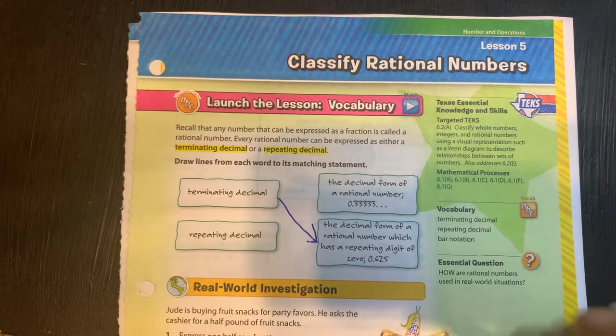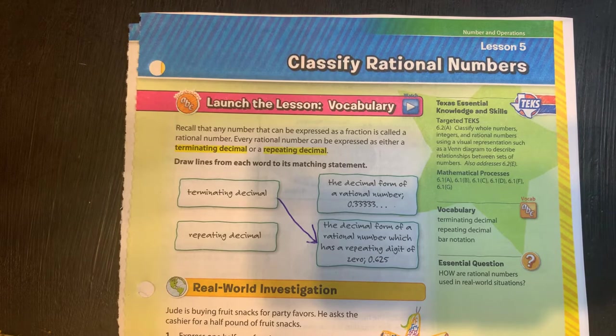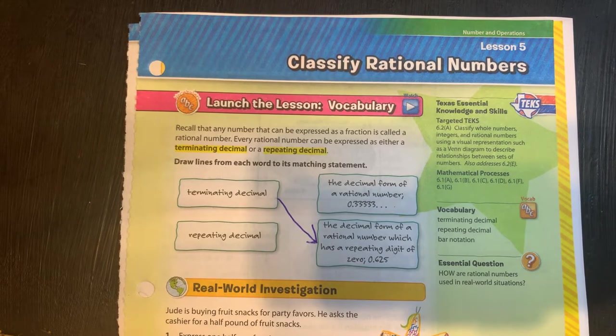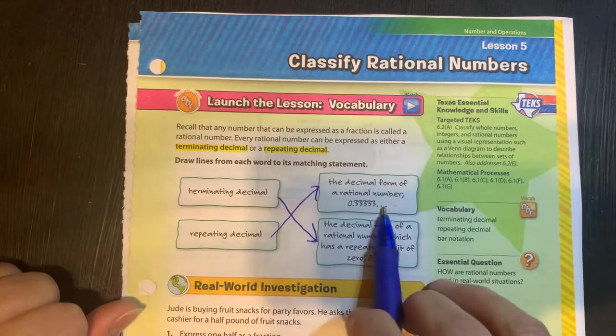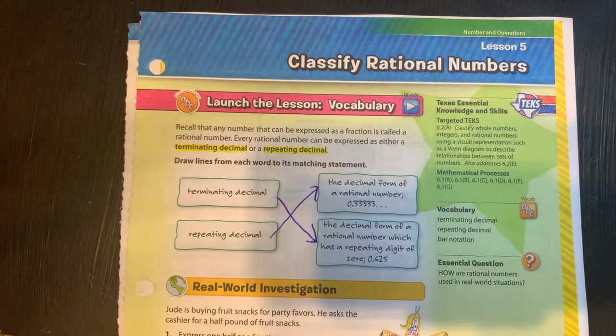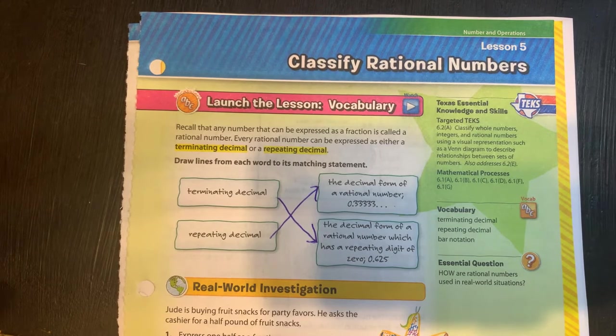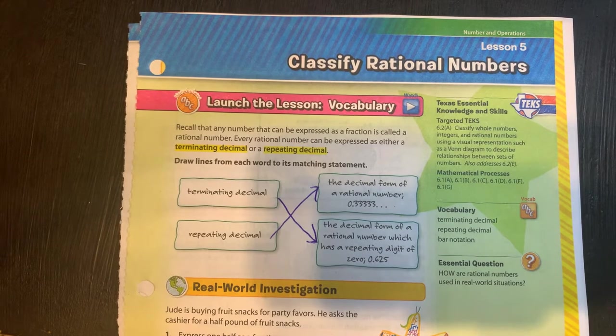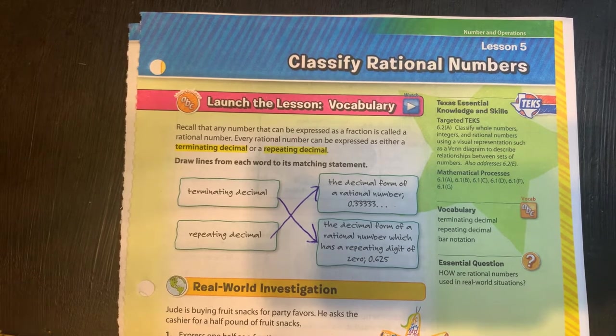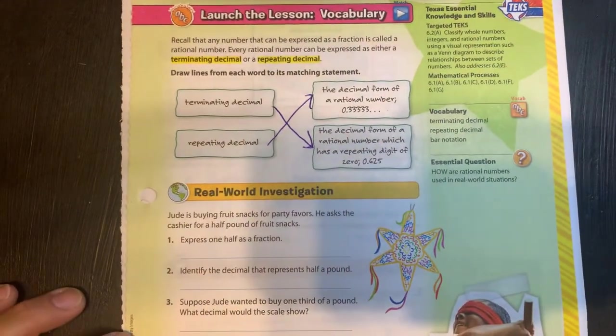Here's an example. You've got 625 thousandths. And then you have just the opposite. Your repeating decimal would be a decimal form of a rational number which would be one where it doesn't end. It just keeps repeating and repeating. We're going to look at this and hopefully this will make it easier to understand.